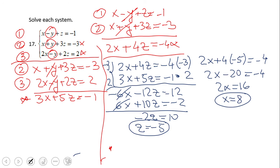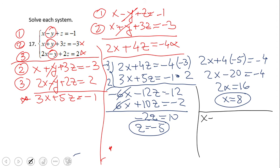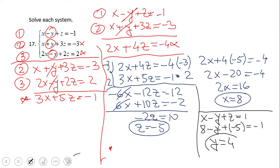The last thing we need to find is y. Going back to the first equation — x minus y plus z equals one — we end up with eight minus y plus negative five equals negative one. Solving that, we get y equals four. So the solution set for this system of equations is x equals eight, y equals four, z equals negative five.